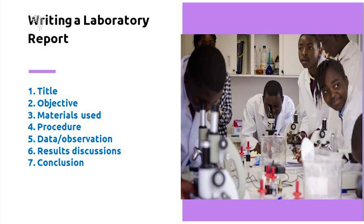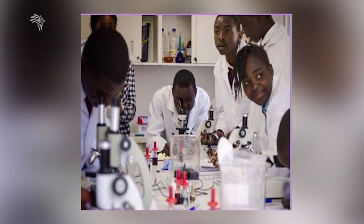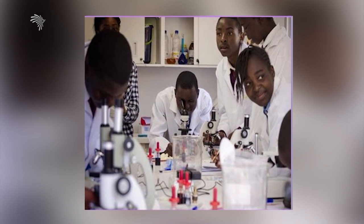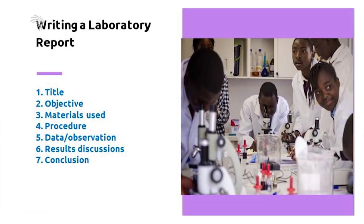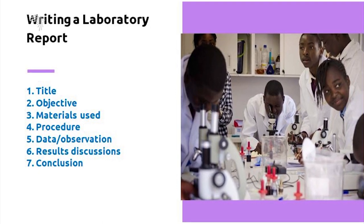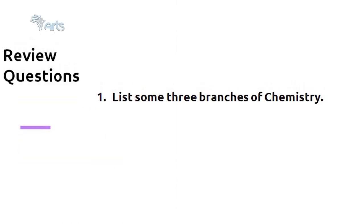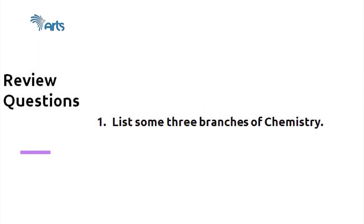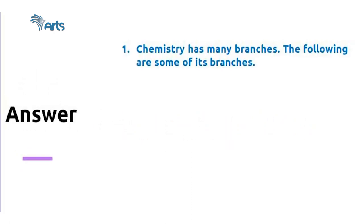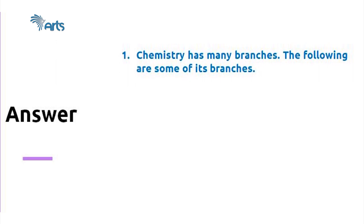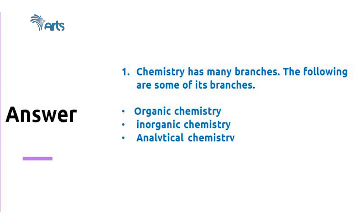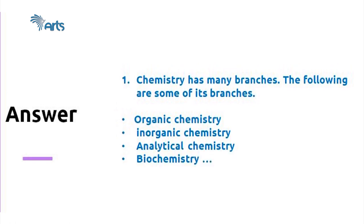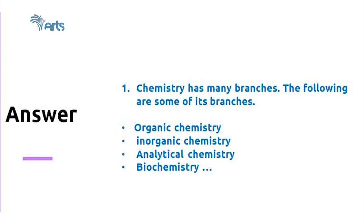Now let me pose some review questions. Question one: list some three branches of chemistry. The answer is: organic chemistry, inorganic chemistry, analytical chemistry, and biochemistry are all well-known branches of chemistry. Question two: what are the seven SI base units? They are mass, length, time, temperature, amount of substance, electric current, and luminous intensity.